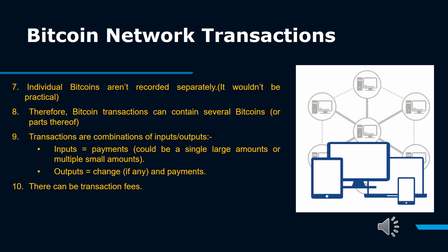A Bitcoin transaction contains both locking and unlocking scripts. The locking script typically contains the Bitcoin address, whereas the unlocking script usually contains a digital signature created from the user's private key. The unlocking script is used to verify the transaction.